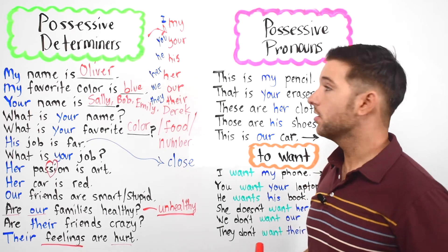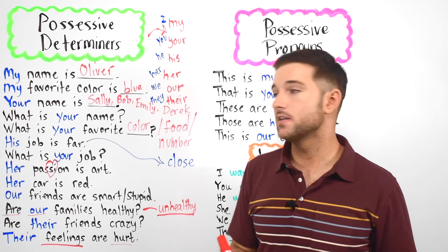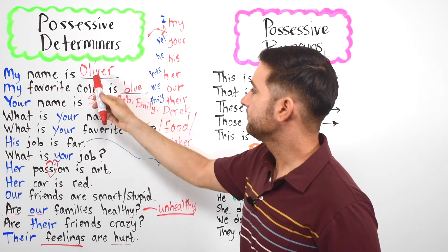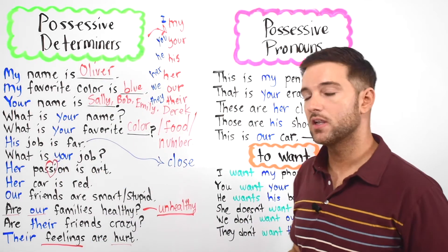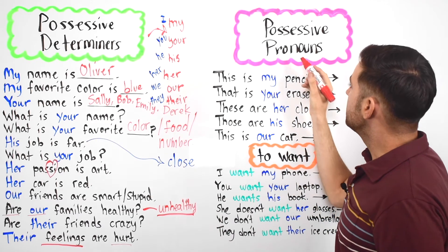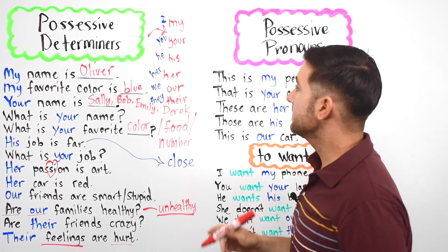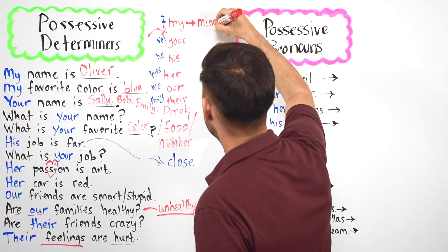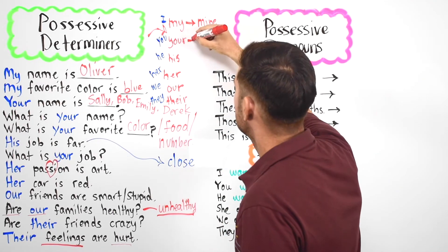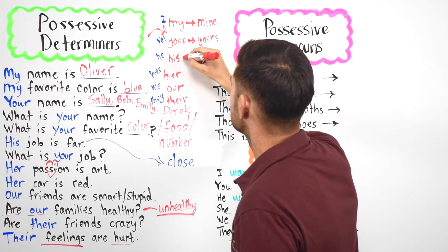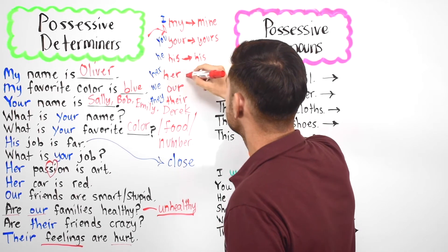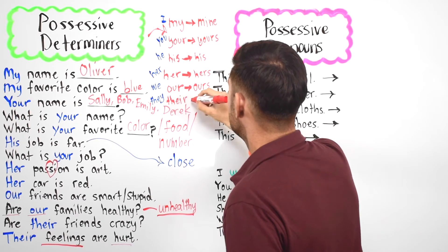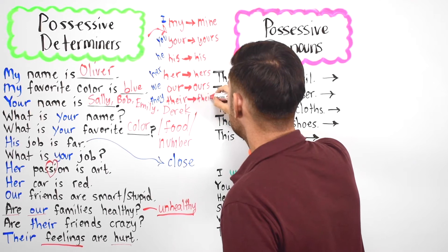Now we are going to look at possessive pronouns. Remember, we use possessive pronouns in place of a noun. The possessive pronouns are: mine, yours, his, hers, ours, and theirs.